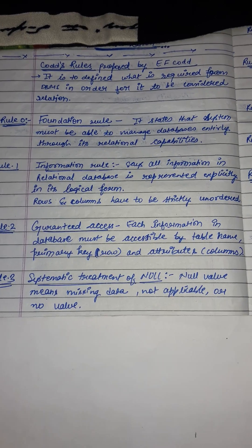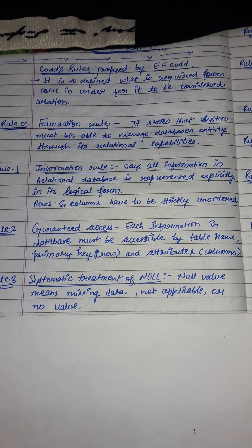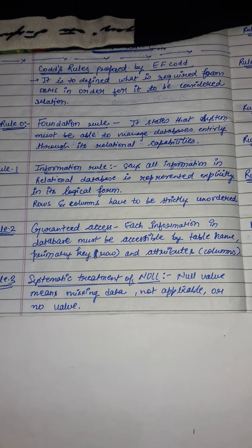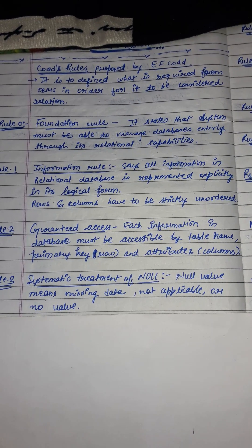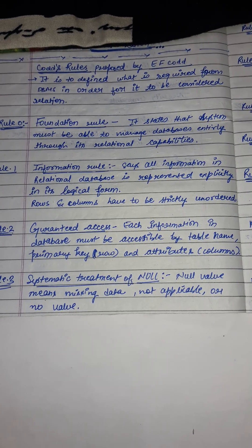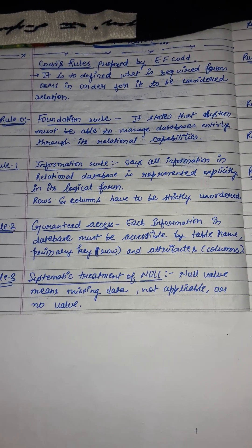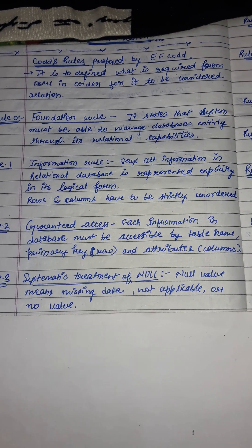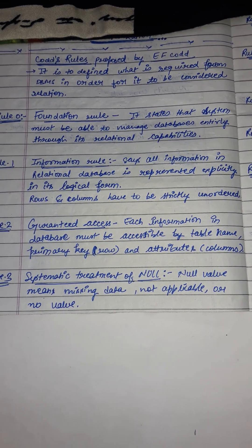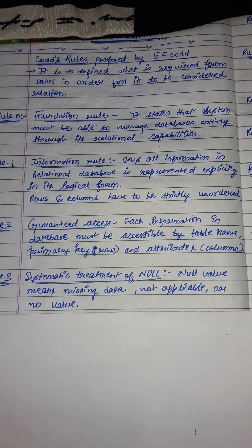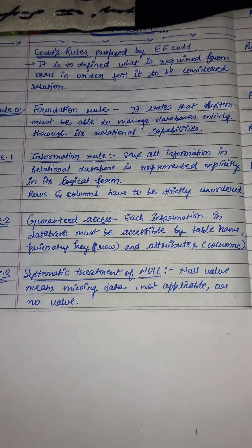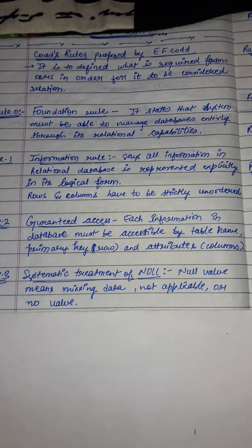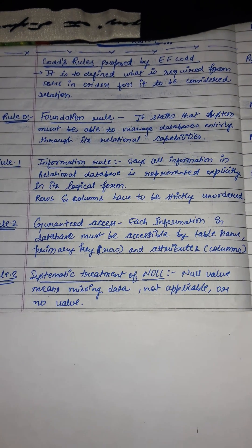Rule 3 is systematic treatment of null. The RDBMS — relational database management system — must support null values to represent missing information. Null values must be distinct from 0 or spaces, and must be independent of data value. A null value means missing data, not applicable, or no value.